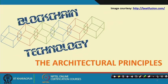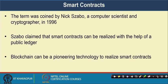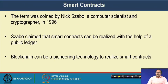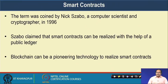In the last class we started discussing about smart contracts. The term 'smart contract' was first coined by Nick Szabo, who was a computer scientist and cryptographer, in 1996. Szabo claimed that smart contracts — establishing contracts between multiple parties — can be realized with the help of a public ledger. Because it can be realized by a public ledger, the same concept can also be realized using a blockchain. Blockchain can be a pioneering technology to realize smart contracts.